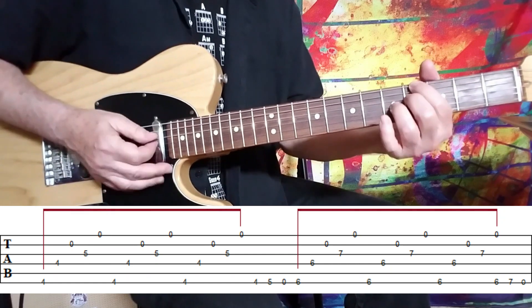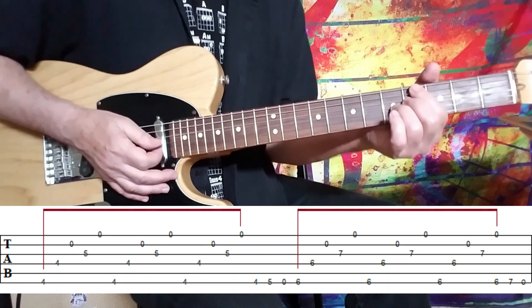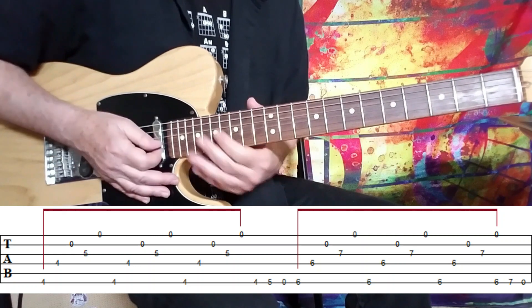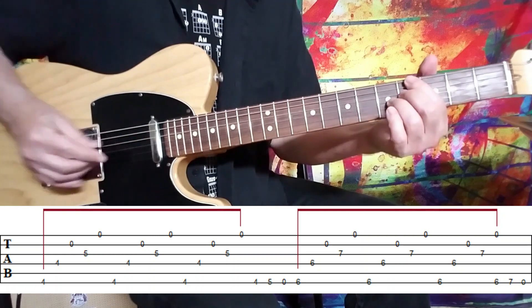But anyway, the picking is the same. You can see it's sort of a dominant seventh type shape and employing those open strings again, okay? So here it is nice and slow.